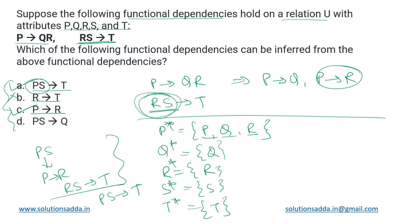The last one, PS derives Q. Now since P can independently derive Q, so if we add another attribute on the left hand side which is S, then also PS will be able to derive Q. So this dependency also holds true in this case. So in total, we have got A, C, and D as the functional dependencies that can be inferred from those given to us. So this is the correct answer.